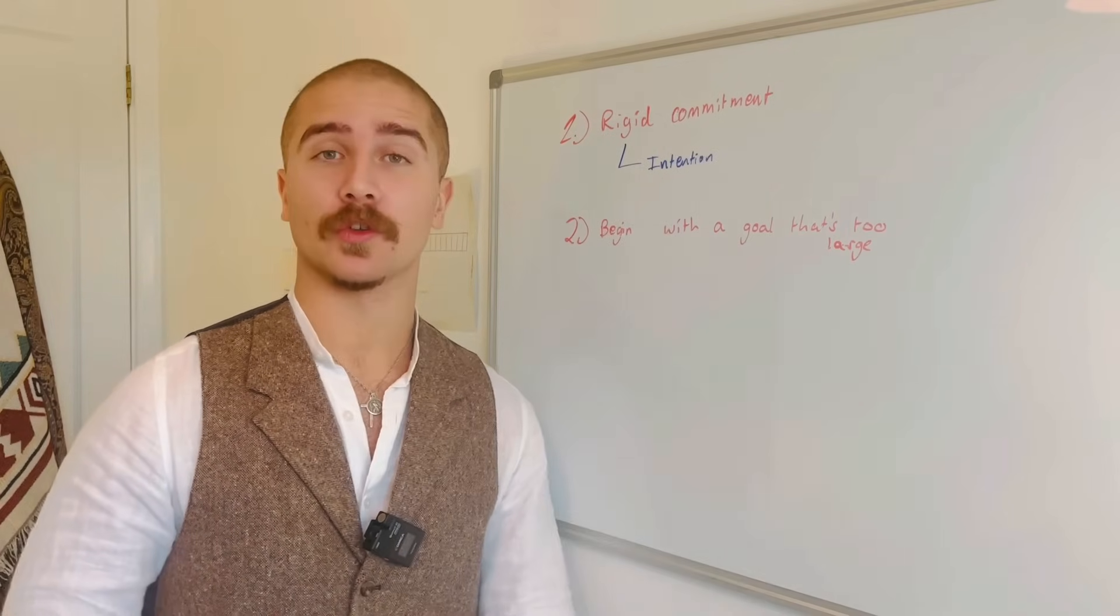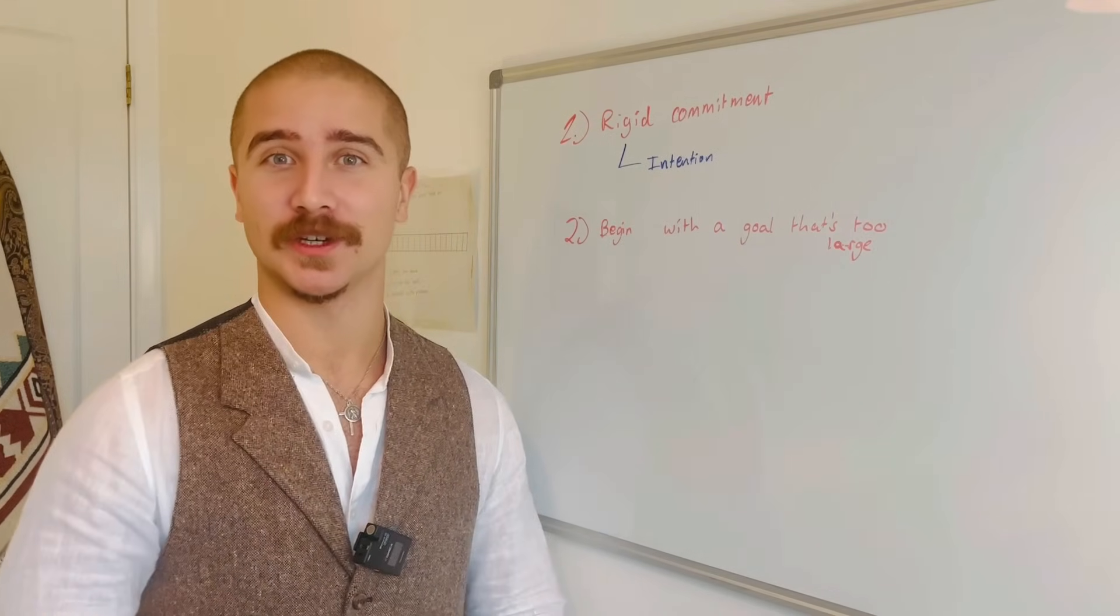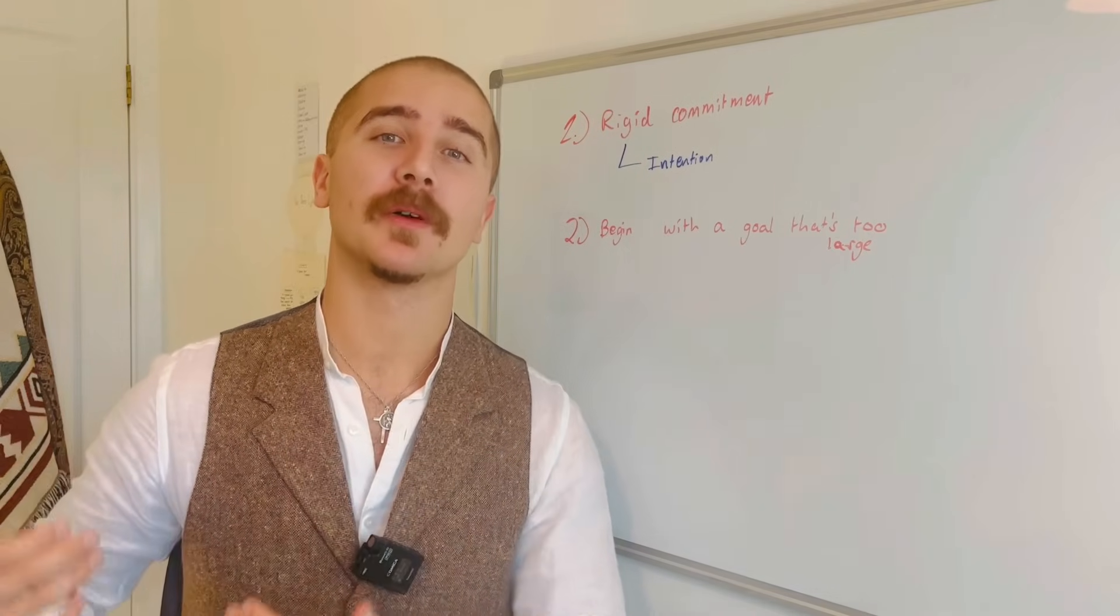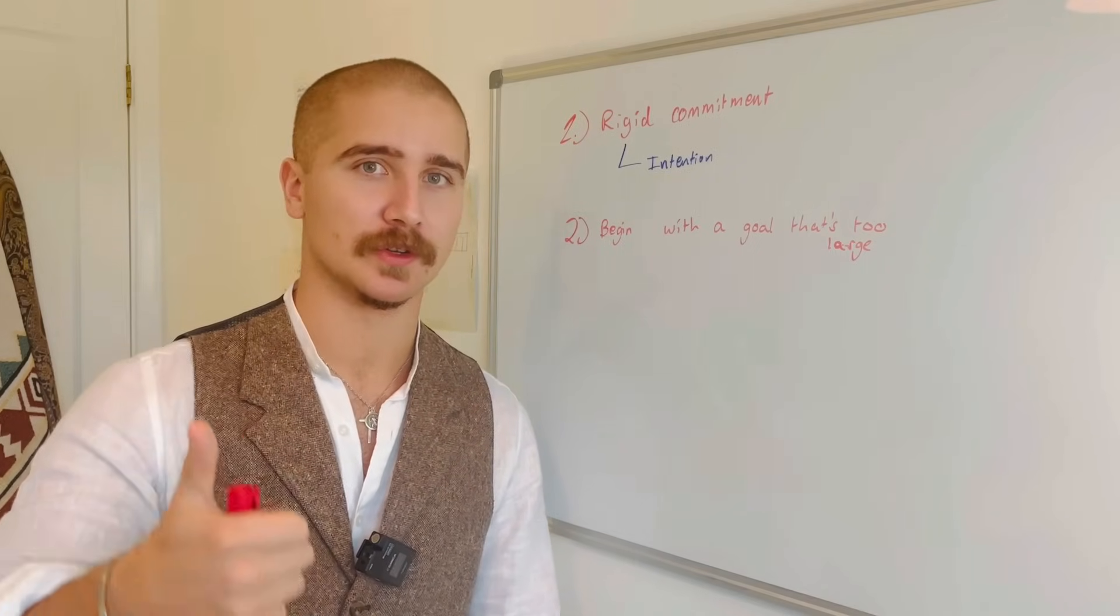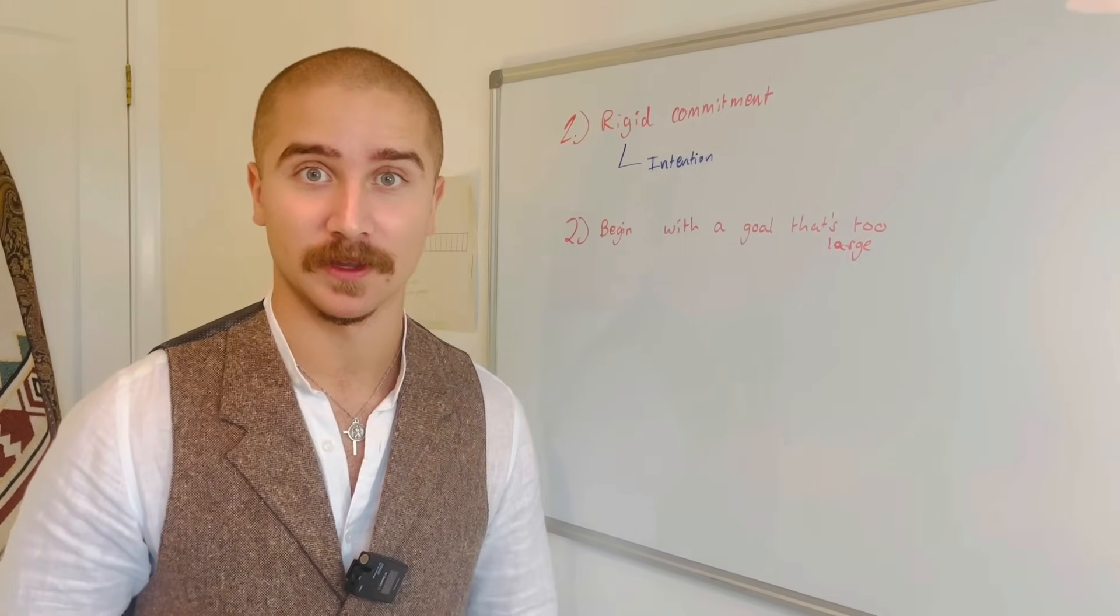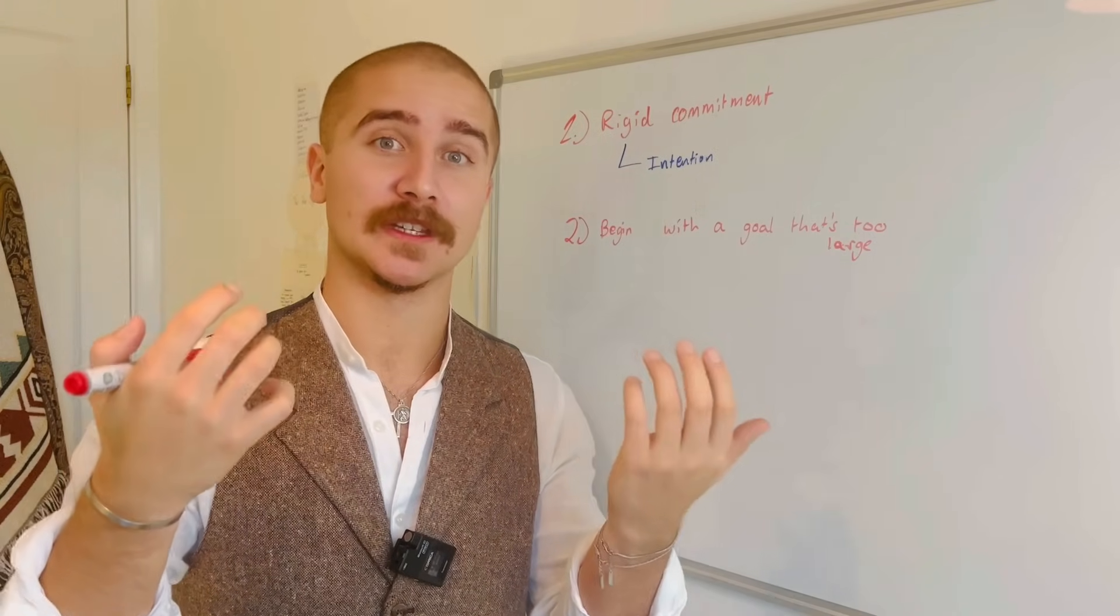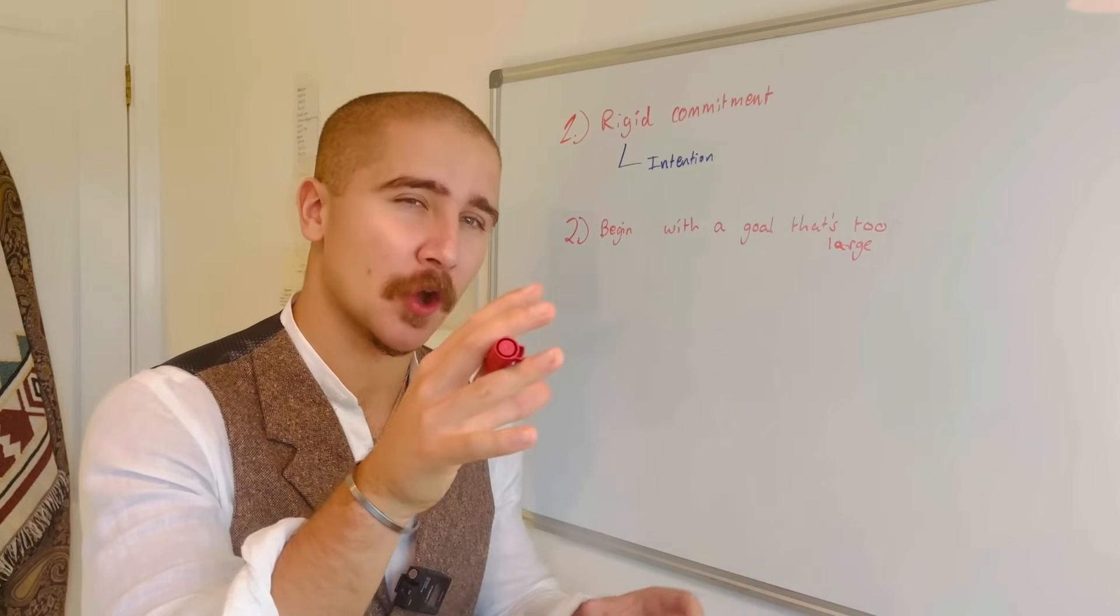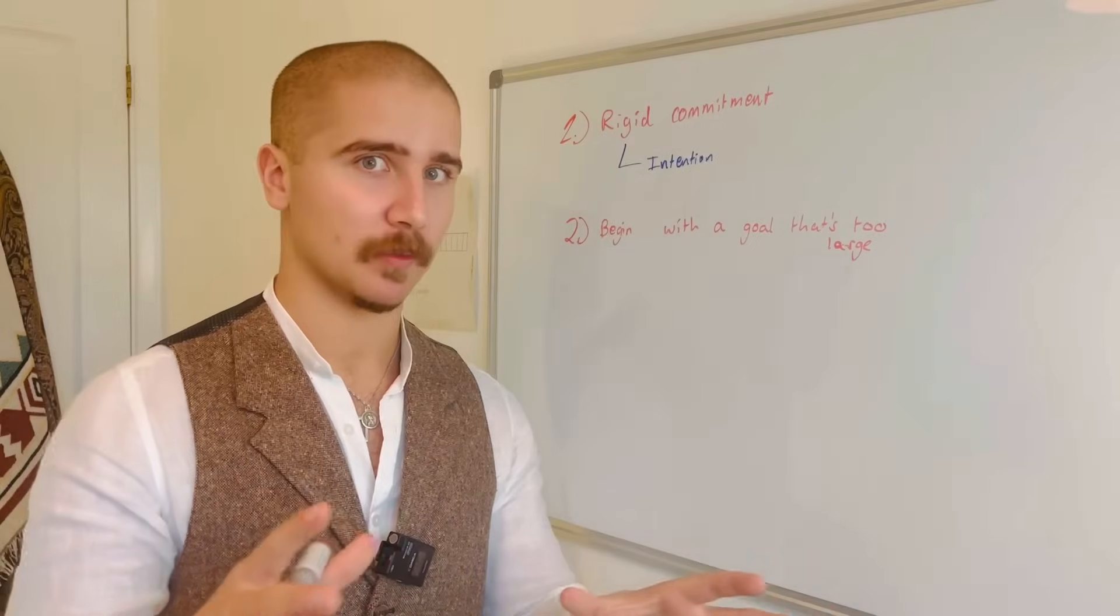To prevent this, set your commitment not as a commitment per se, but as an intention with the understanding that you intend to overcome your perfectionism but sometimes you will falter. Number two is you might begin with a goal that's too large. You might convince yourself you have to overcome your perfectionism within a week, but your perfectionism has been mentally programmed over years of your childhood, adolescence and adulthood. So focus on one area of your life that you feel perfectionism is negatively impacting you and make the intention to just let go of your perfectionistic rules in that area.